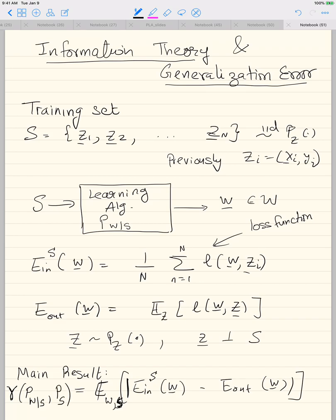The generalization error is a function of two quantities: P(S), the distribution of the training set, which is just i.i.d. P(Z), and P(W|S), which comes from the algorithm. We are going to have an explicit bound that depends on P(W|S) and P(S). The VC dimension-based bounds are completely agnostic to these quantities.